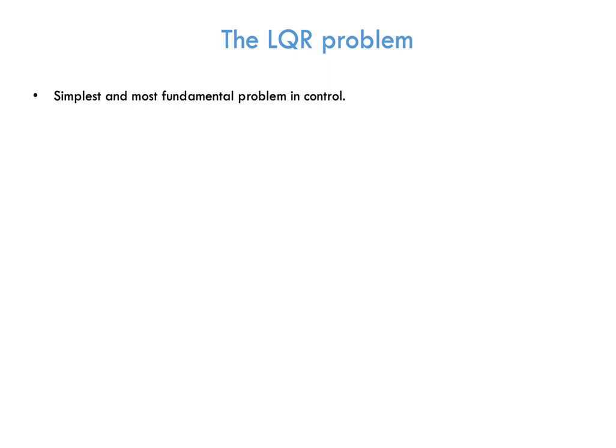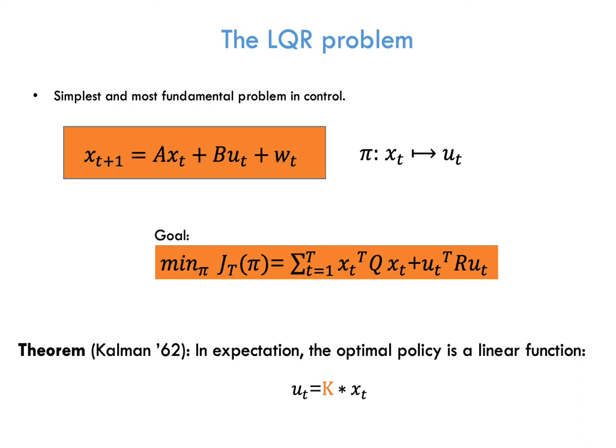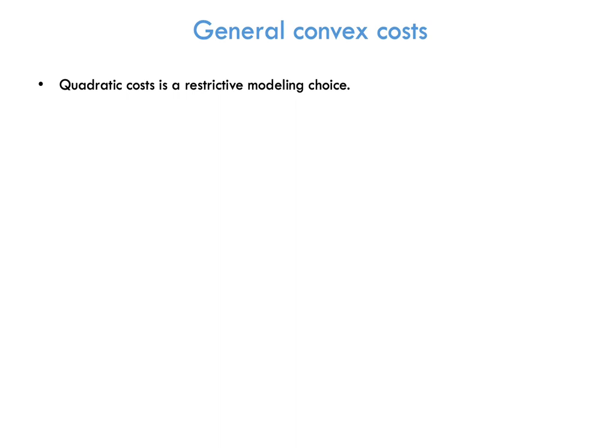The linear quadratic regulator problem is the simplest and most fundamental problem in control. We have our linear dynamical system and we define a policy π to be a mapping from the current state to the current control input. The goal in LQR is to find the policy that minimizes the cumulative quadratic cost. The intuition behind the quadratic objective is that we want to keep the state small without applying large control inputs. This problem is very well understood and has a very elegant solution. Kalman in 1962 proved that if we care about the expected cost, the optimal policy is just a linear function, given by some matrix K. The fact that the costs are quadratic is key to get this theorem.